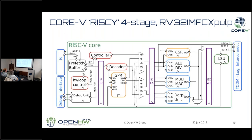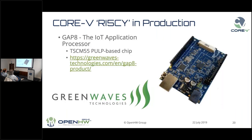Some commercial uses outside the university: an organization called GreenWaves, a very impressive company in Grenoble, has a product called the GAP8. This actually has nine RISC-V core-five cores — one control processor and then an octal set of accelerators doing IoT edge processing for AI and ML. There's a very cool drone video with their device, of a drone flying around in one of the buildings at ETH Zurich. This is in production and available now.